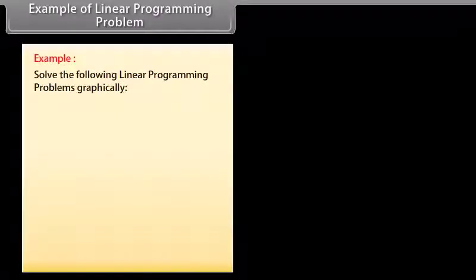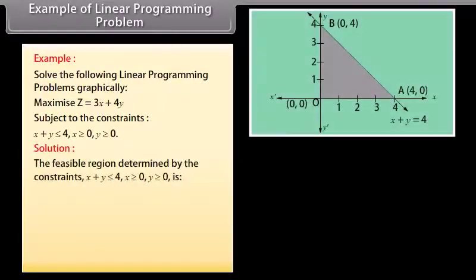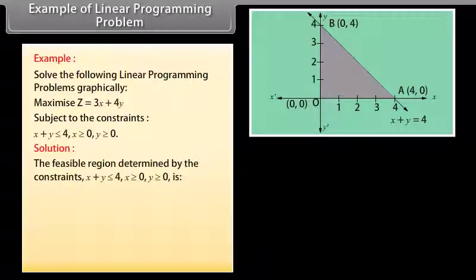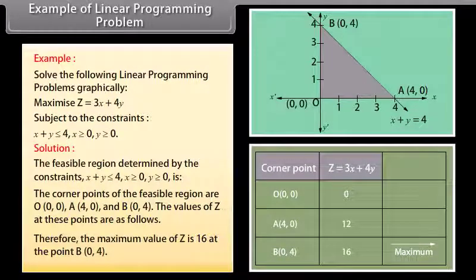Example of linear programming problem: Solve the following linear programming problem graphically. Maximize Z = 3X + 4Y, subject to X + Y ≤ 4, X ≥ 0, Y ≥ 0. Solution: The feasible region is determined by the constraints. The corner points are O(0, 0), A(4, 0), and B(0, 4). The values of Z at these points are evaluated, and the maximum value of Z is 16 at point B(0, 4).